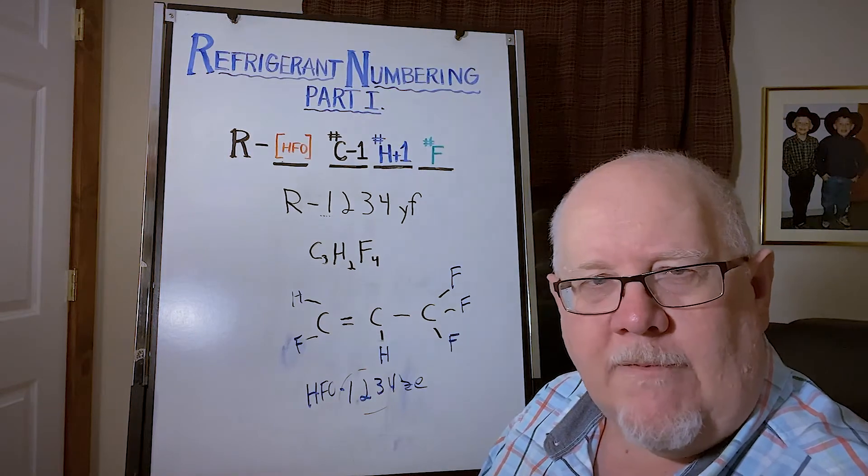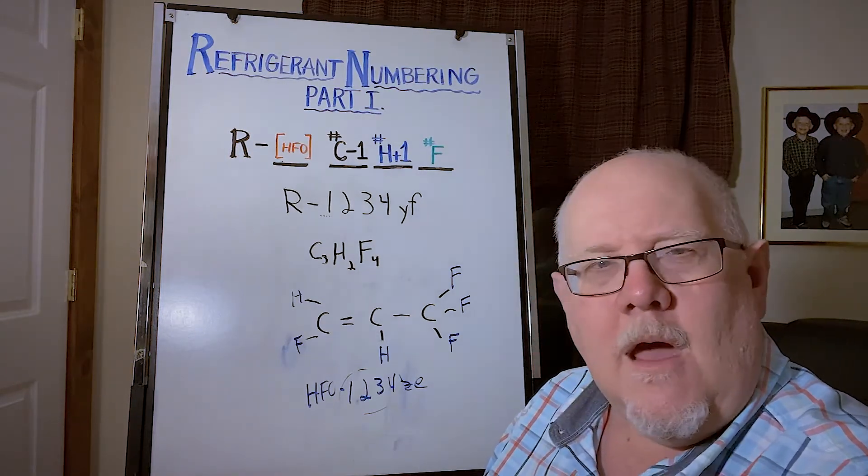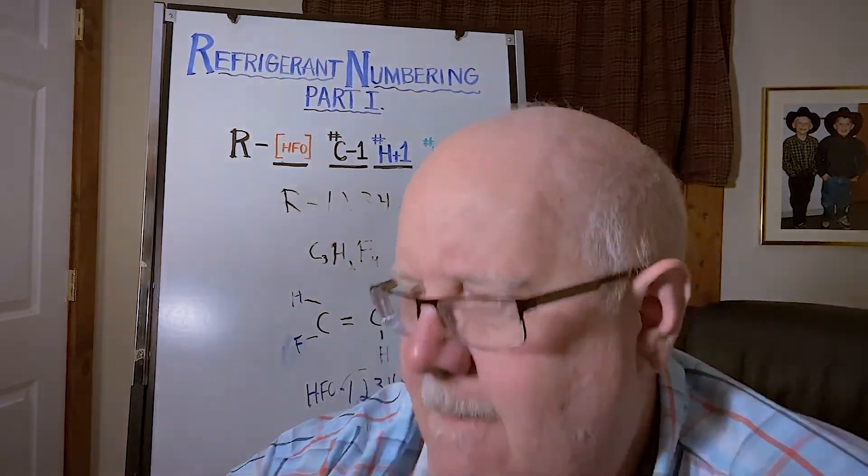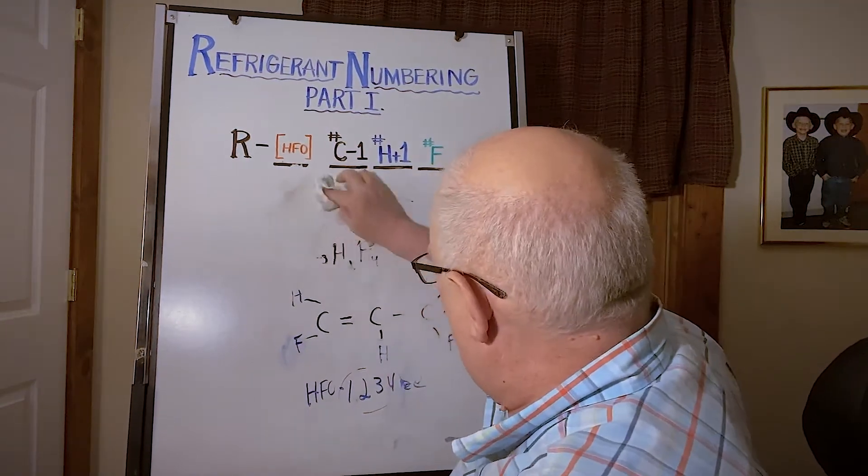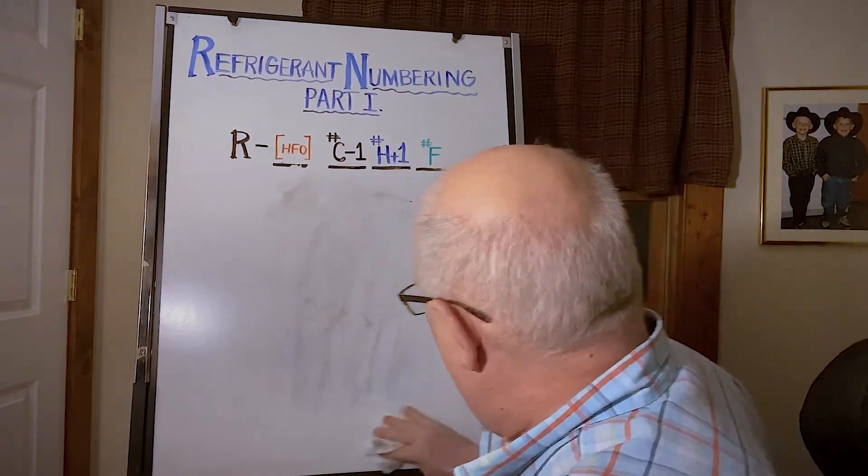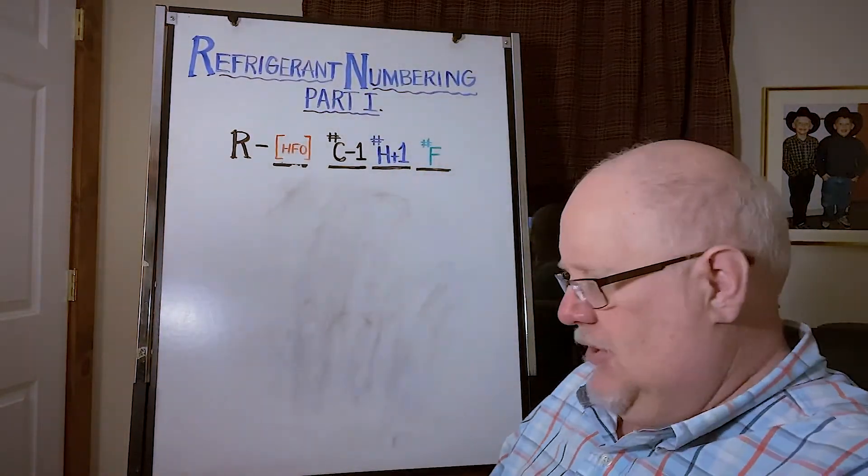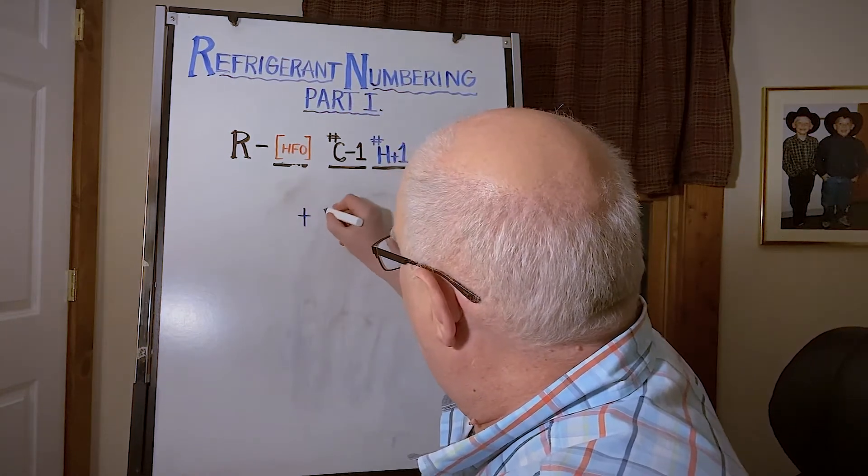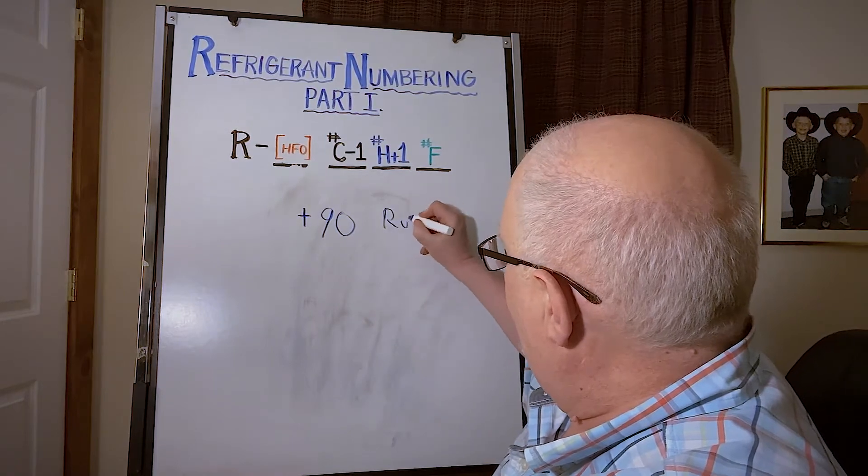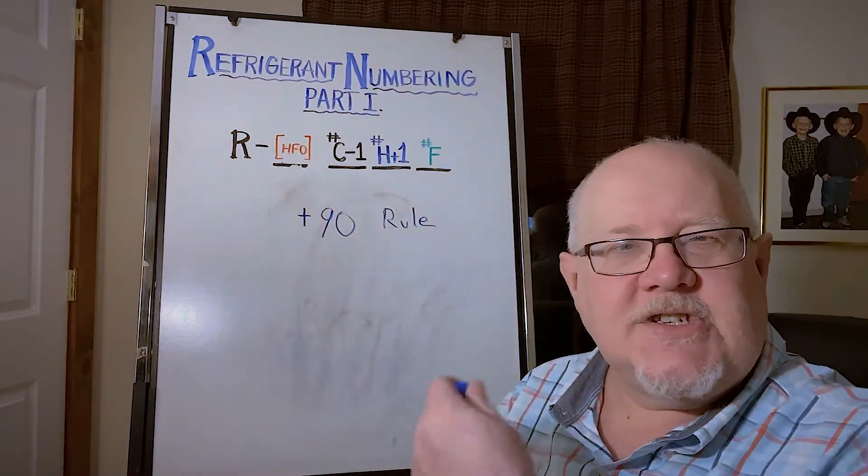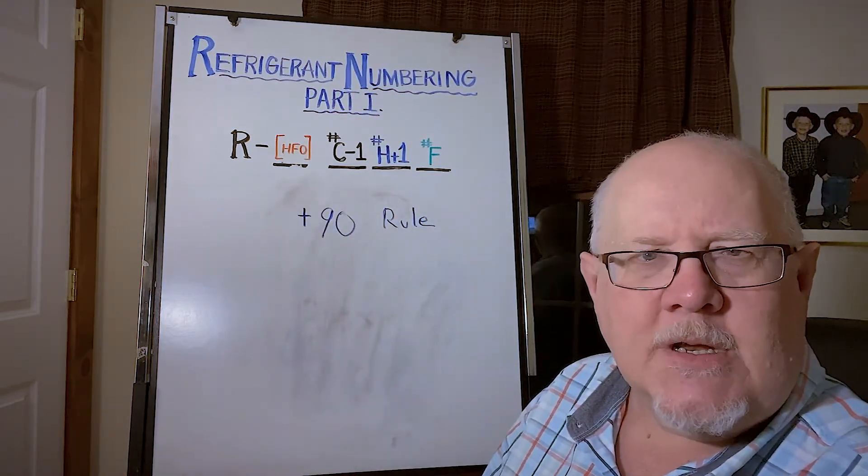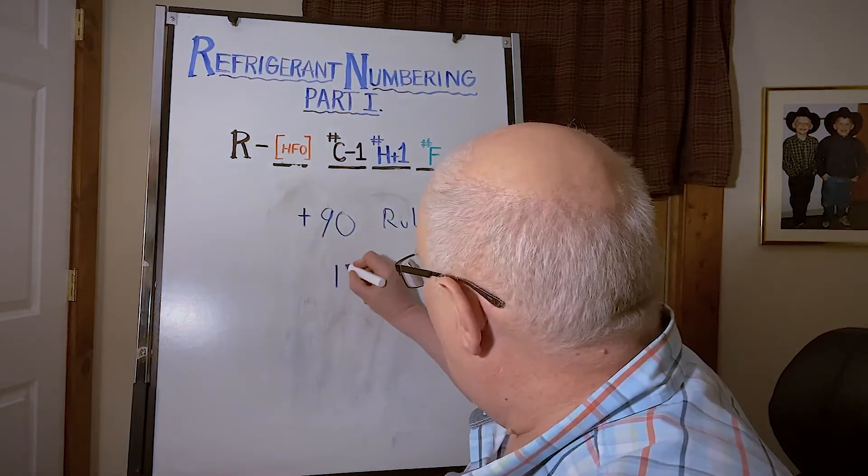I hope that was helpful. I got a little shortcut here for you, and the shortcut is really the plus 90 rule. That says you basically just add 90 to the R number and then you can read out directly the number of fluorine, hydrogen, and carbons in the molecule.